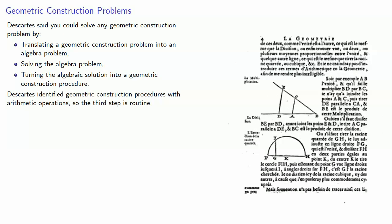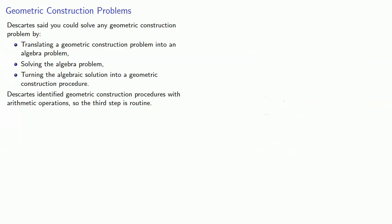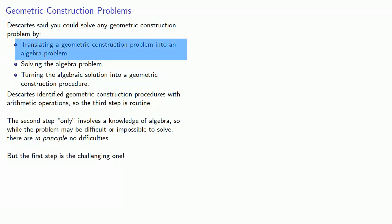Now Descartes had identified geometric construction procedures with arithmetic operations, so the third step is routine. The second step only involves the knowledge of algebra, so while the problem may be difficult or even impossible to solve, there are in principle no difficulties. And as always, the first step is the challenging one. How do you translate a geometric construction problem into an algebra problem?